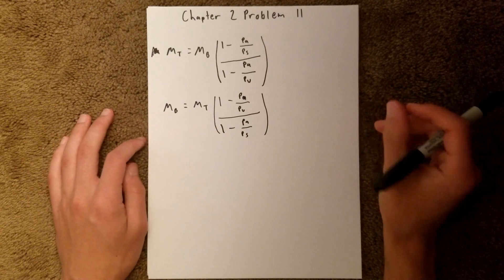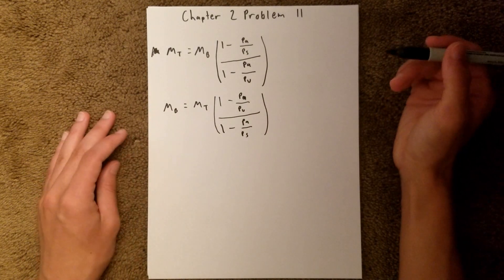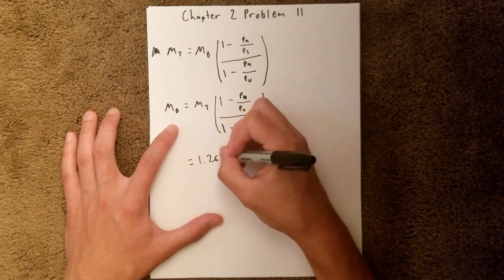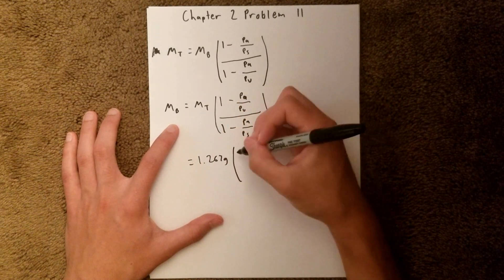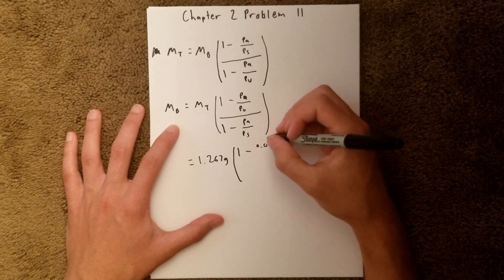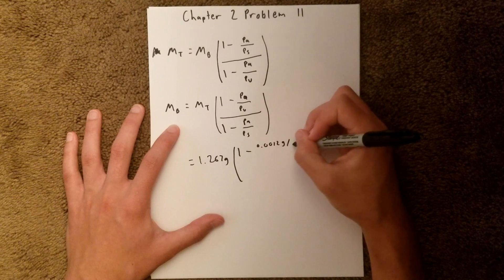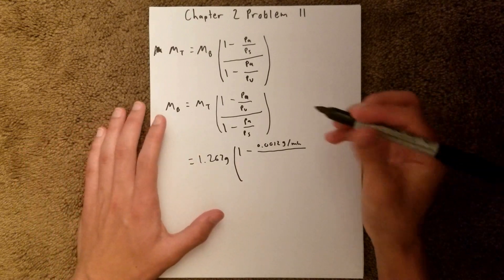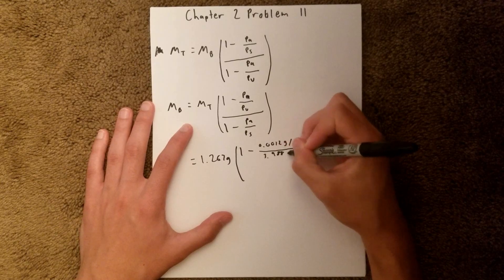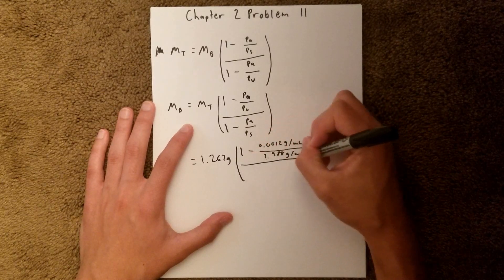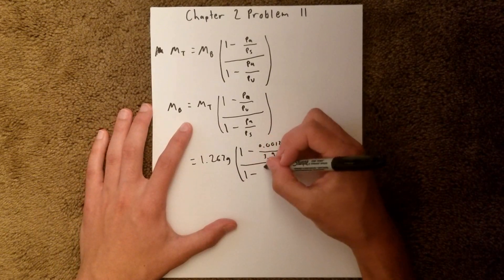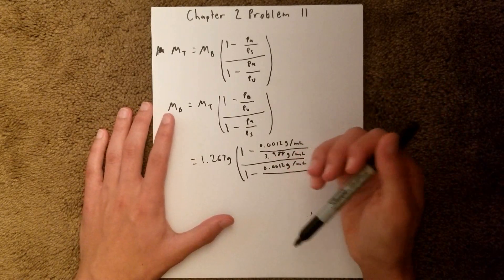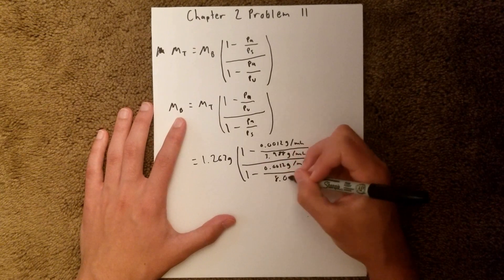And we have all these values in the problem, and some of them are universal constants, so we can plug all of those in. Our true mass is 1.267 grams, and the density of air is 0.0012 grams per milliliter. The density of our unknown, we are given in the problem, which is 3.988 grams per milliliter, over 1 minus the density of air, which is the same as above, over our standard density, which is a universal constant, 8.0 grams per milliliter.